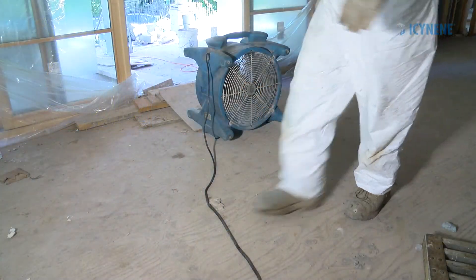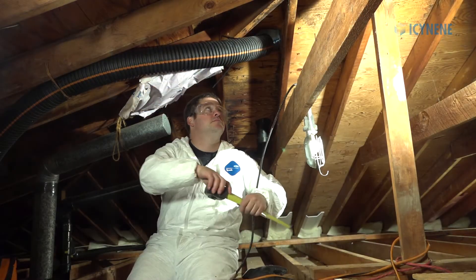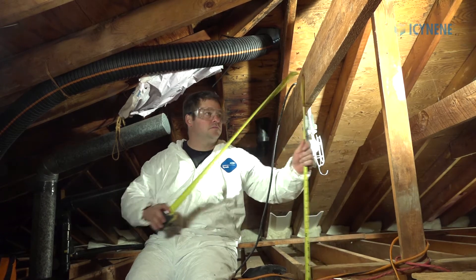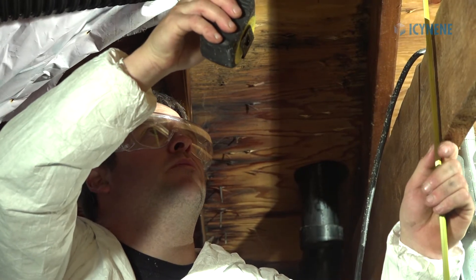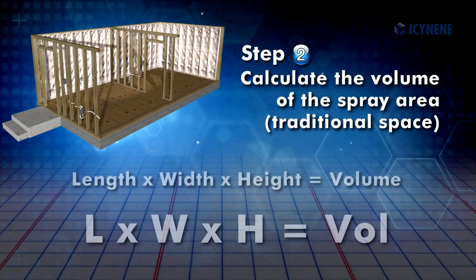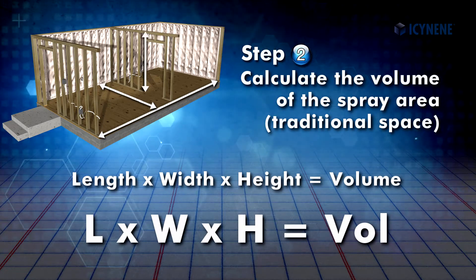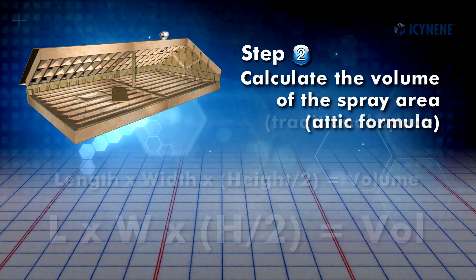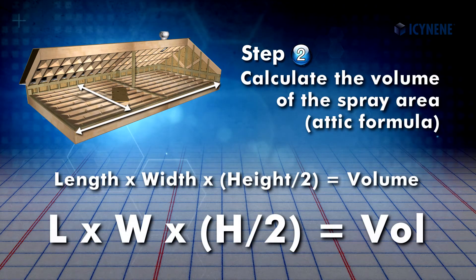To determine the size of fan or fans required, we must first calculate the volume of the area to be sprayed. The volume is calculated by measuring the length, width, and height of each room where the spray foam is to be applied. For a traditional space, multiply the length by the width by the height to derive the volume. When working with an attic space, multiply the length by the width by half the height.